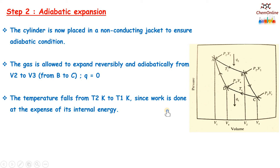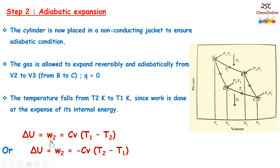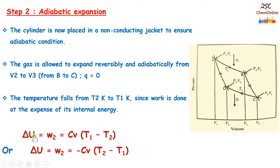So delta U equals W2, which equals Cv(T1 minus T2), or equivalently minus Cv(T2 minus T1). In adiabatic expansion Q equals 0, so according to the first law delta U equals W. Therefore delta U equals W2 equals Cv(T1 minus T2), or minus Cv(T2 minus T1).